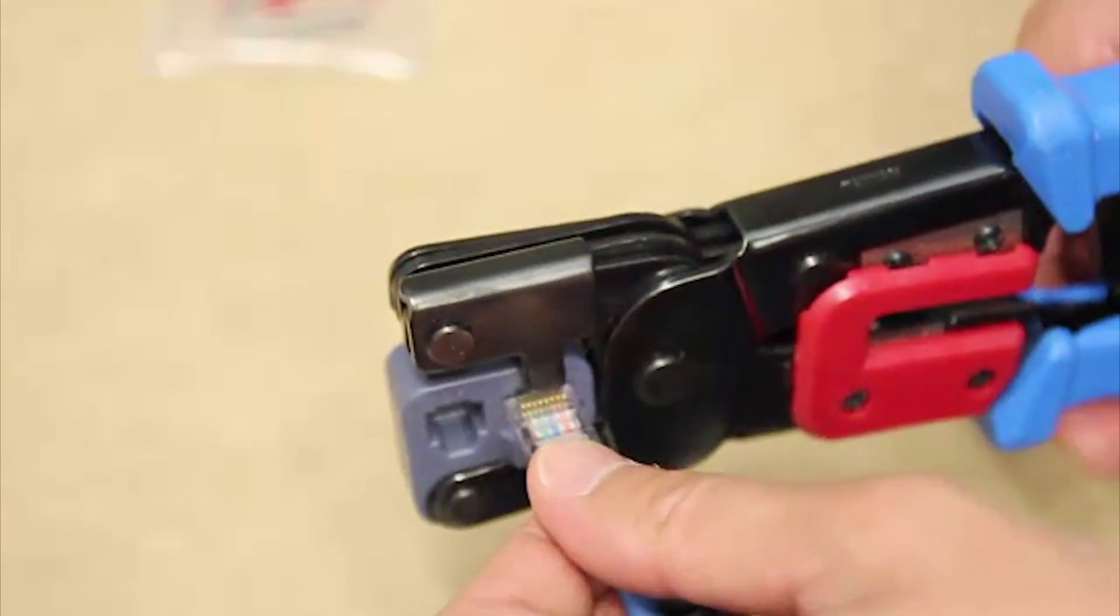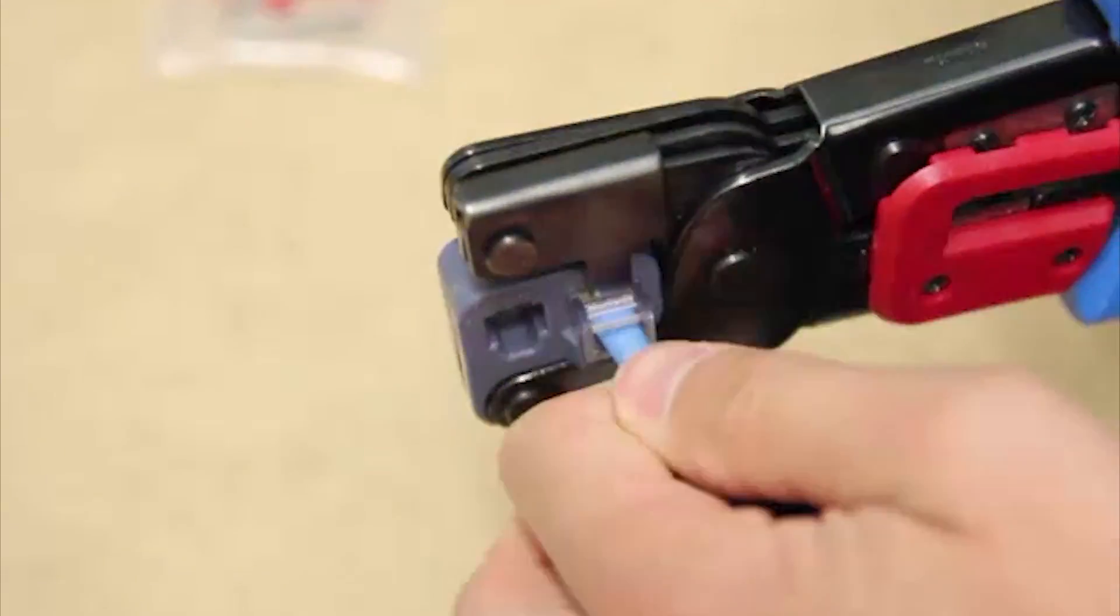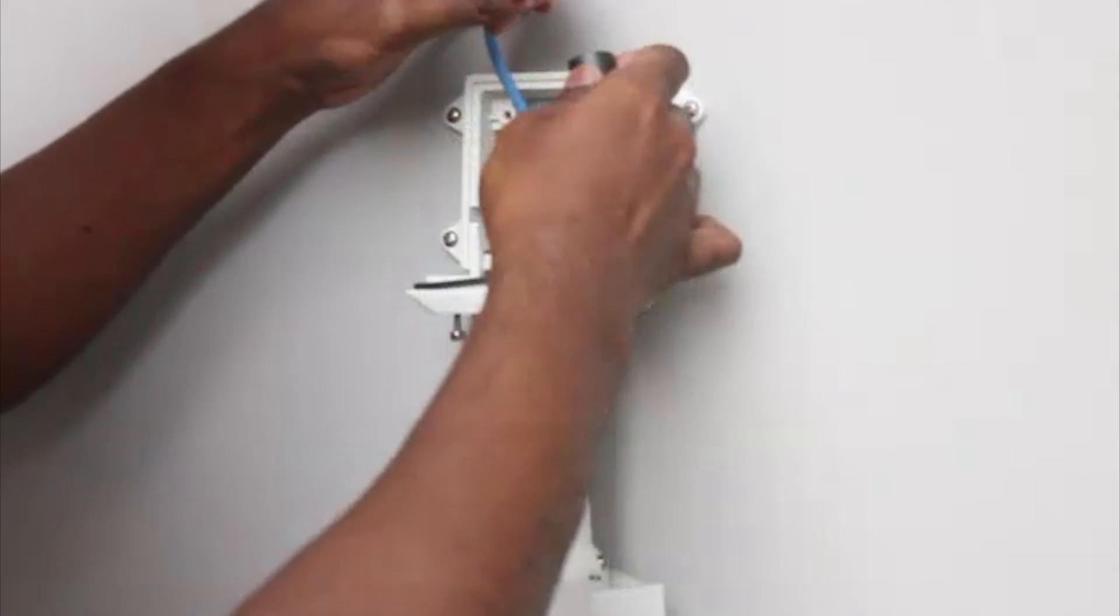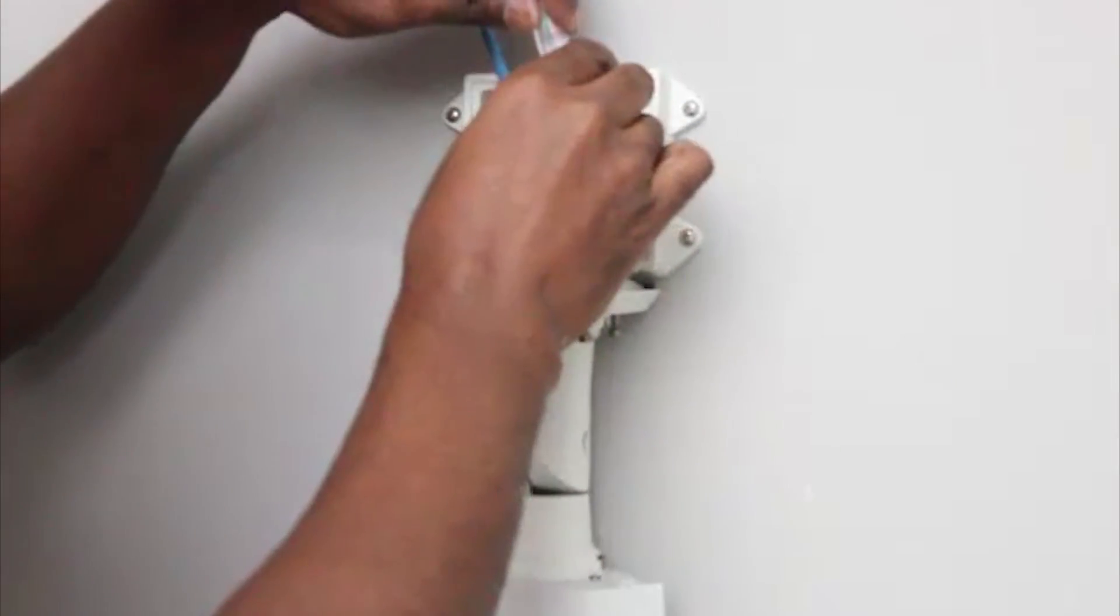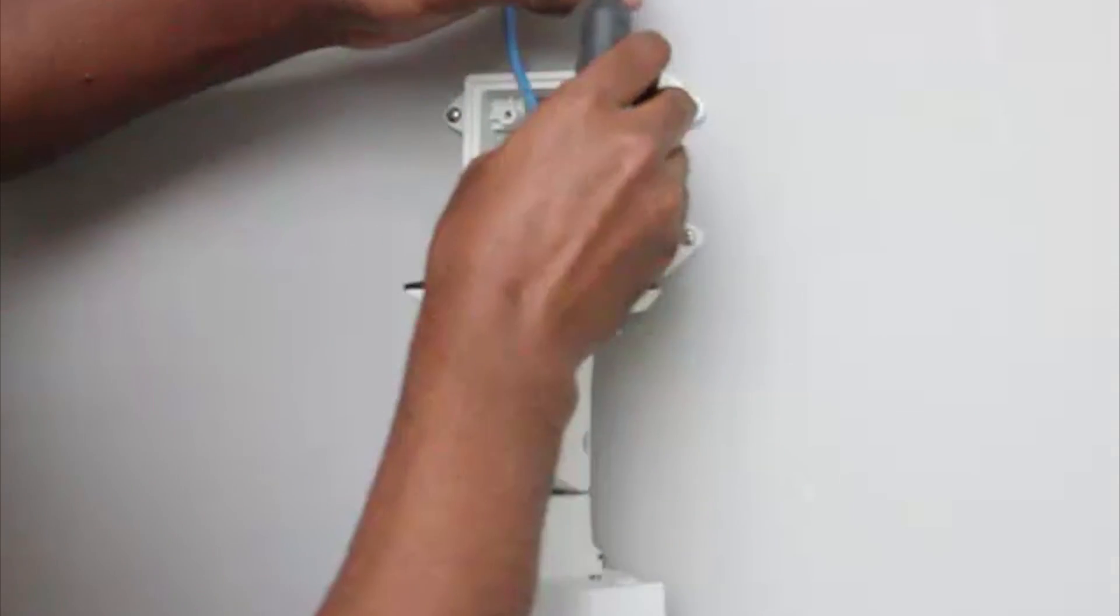Then, crimp the ethernet cable. After you connect the cable to the camera, slide the boot over the ethernet port.